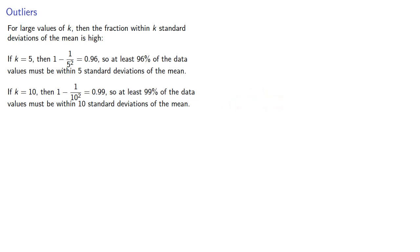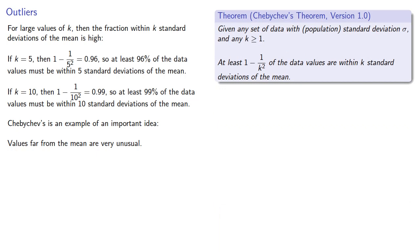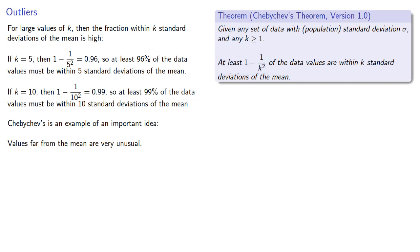Chebyshev's theorem illustrates a very important idea: values far from the mean are very unusual. The remarkable thing about Chebyshev's is that the only thing we have to know about our data set is the mean and the standard deviation. But at the same time, it doesn't give us very precise information — we know at least some percentage is within k standard deviations of the mean, but for a more exact amount, we have to know more about the distribution of the data values.